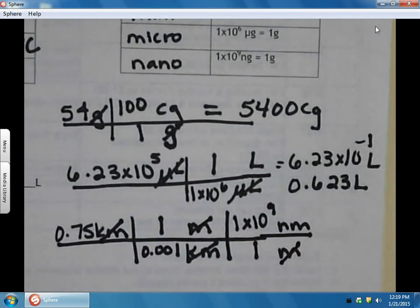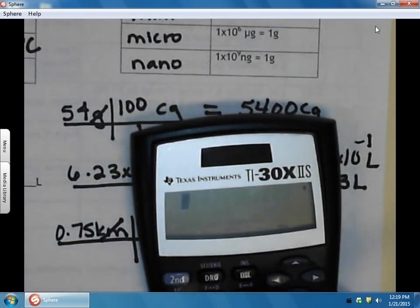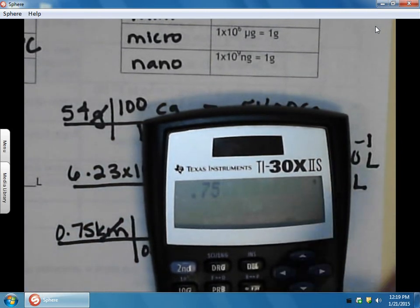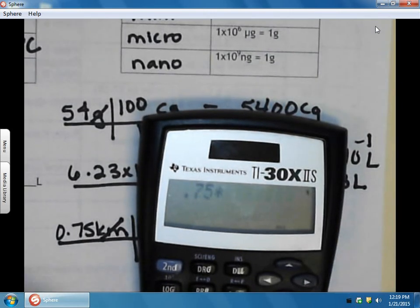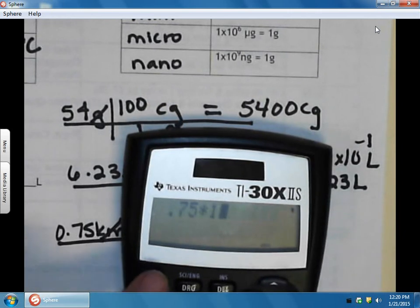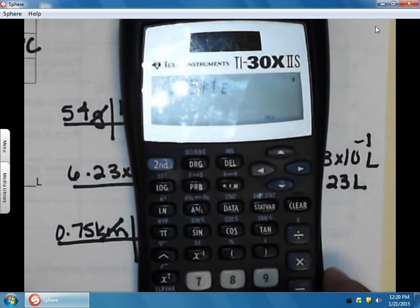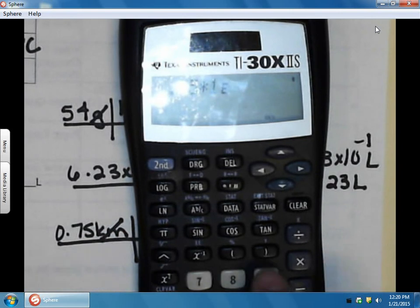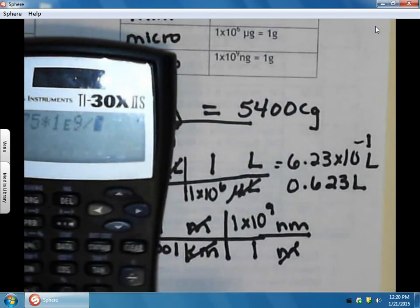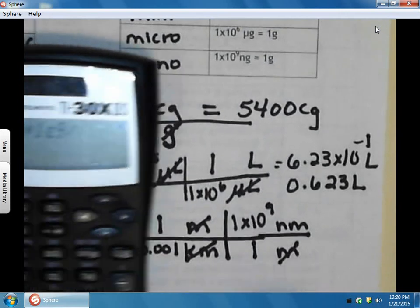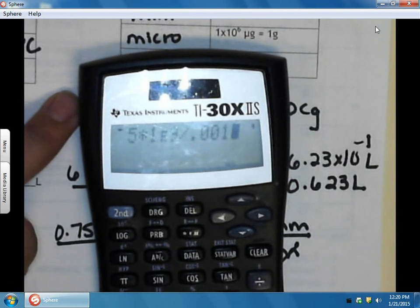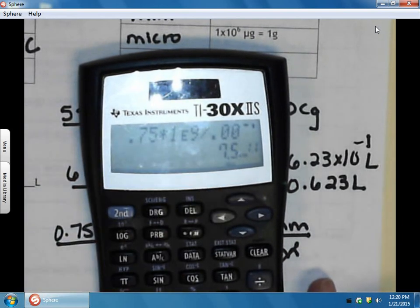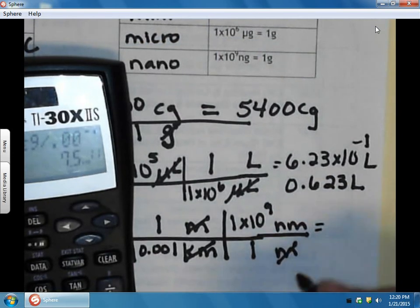To use our calculators, we would type in 0.75 times 1E—that EE button, if you have a graphing calculator, is also on there; it's the second function comma button on a graphing calculator—9 for the exponent. Then we're going to divide by 0.001 because it was on the bottom. So we divide by 0.001, and here we get 7.5×10^11 nanometers.